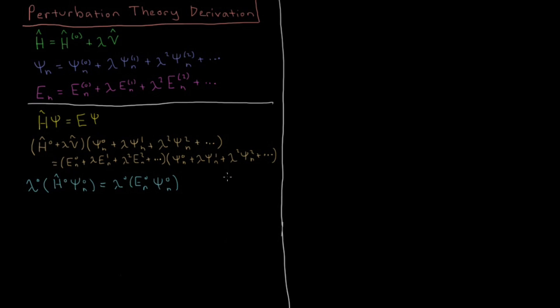So that means that our zero-order energy is just going to be the energy of the reference system. And that makes sense because what we expect is that this perturbation is small and that our new system, which we can't solve exactly, is only a slight deviation away from this reference system. So it makes sense that the zero-order energy is the energy of this reference system.